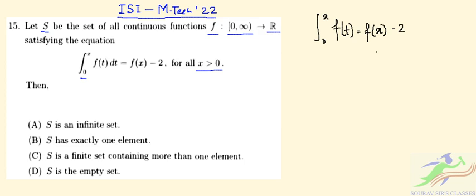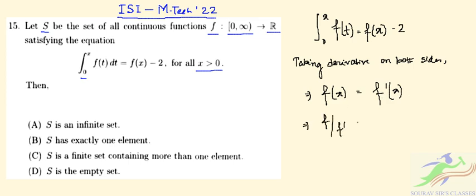If we take derivative on both sides, we will have f(x) equals f prime x. So this will be nothing but f over f prime equals 1.